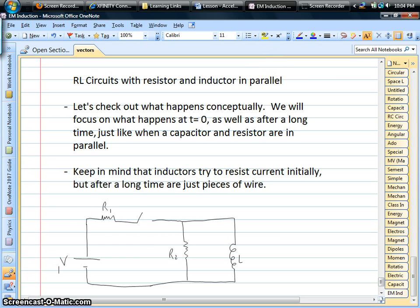And we're back, and we're doing an RL circuit. This is the second type of circuit that we have. Generally we have everything in series with each other: resistor, battery, and inductor.